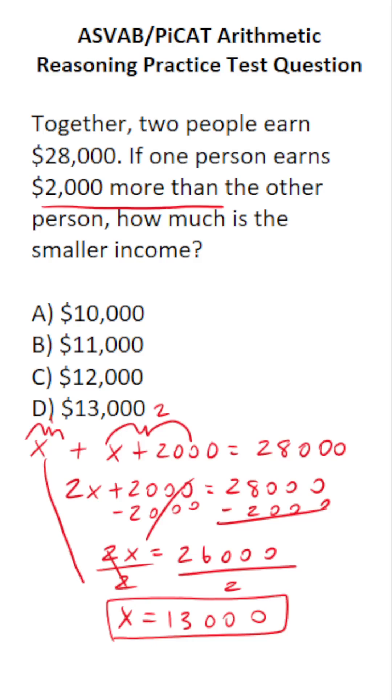X corresponds to the one person's income. So one of them makes $13,000. The other person makes $2,000 more than that, or X plus 2,000, or $15,000 per year. The smaller income, of course, is going to be D, $13,000.